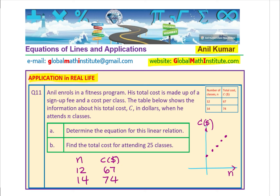You need to determine the equation for this linear relation and find the total cost for attending 25 classes. I like you to pause the video, answer the question, and then look into my suggestions.